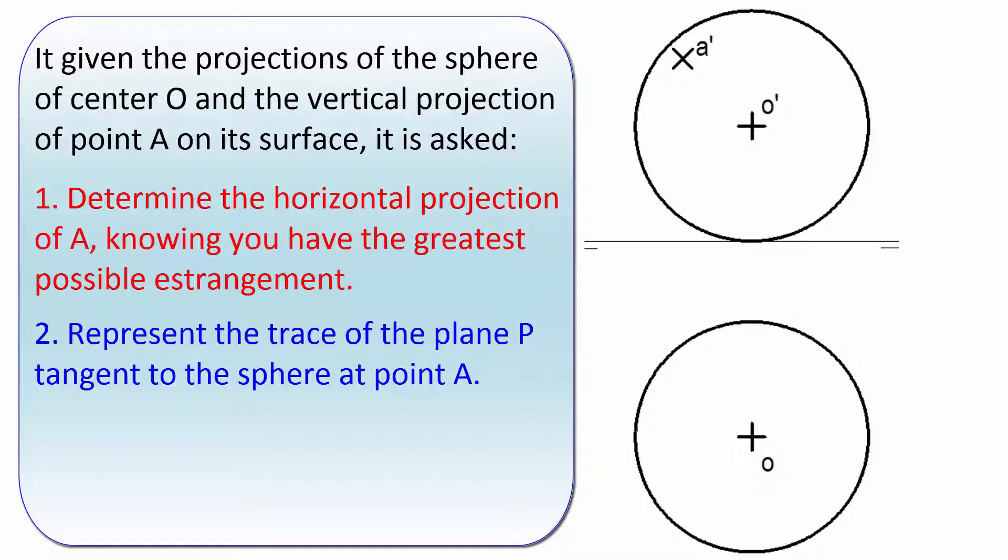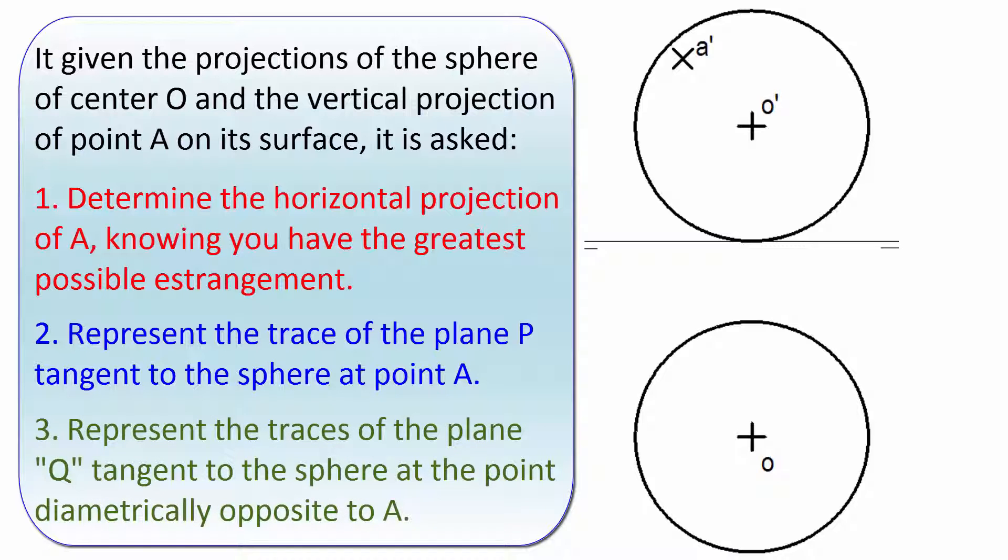2. Represent the trace of the plane P tangent to the sphere at point A. 3. Represent the traces of the plane Q tangent to the sphere at the point diametrically opposite to A.